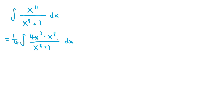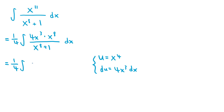This allows us to rewrite the entire integral in terms of u. So if we substitute u equals x to the 4, then du equals 4x cubed dx. The entire expression can then be rewritten as 1 fourth times the integral of u squared over u squared plus 1 du, since 4x cubed dx is replaced by du, and x to the 8 in the numerator becomes u squared, and x to the 8 plus 1 in the denominator becomes u squared plus 1.